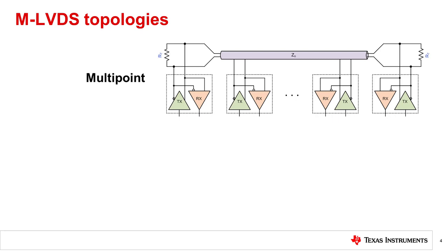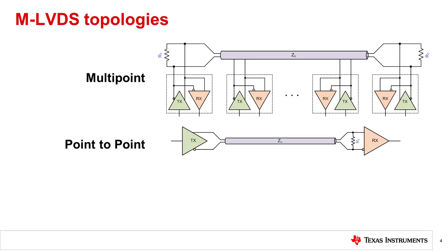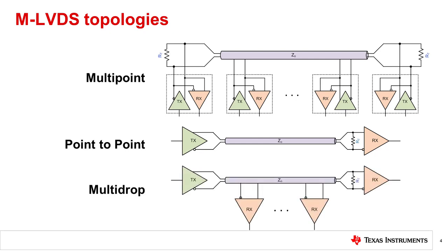While MLVDS technology is geared toward multipoint environments, where there are multiple drivers and multiple receivers as shown here, it can also be used for point-to-point communication where there is only one driver and one receiver. It is also suitable for multi-drop or broadcast arrangements where there is only one driver and multiple receivers.